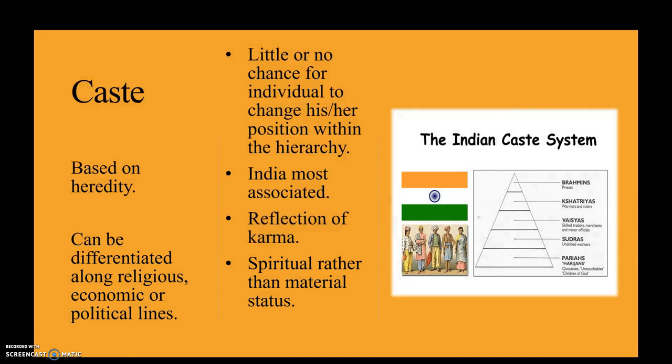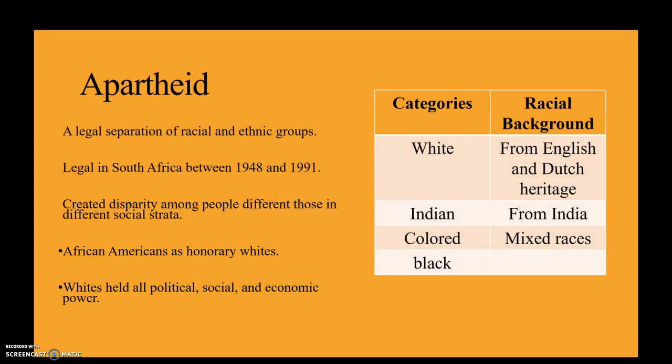India, for example, has the caste system based on heredity — basically people being born in different social tiers with no way of moving out. If you're connected to karma, for example, if you're born at the top, you had a good life and were a good person in a past life, so you deserve being at the top. If you were maybe a terrible person, therefore you're at the bottom and you deserve it — think about how people might internalize this. People cannot marry outside of their tier. The book also mentions apartheid in South Africa, based on race and background.